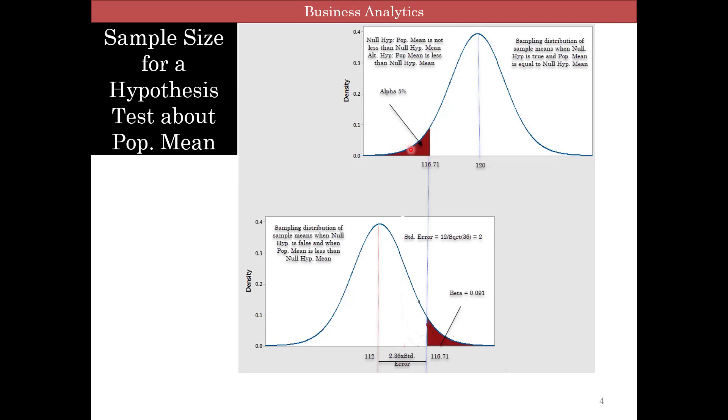If you get a sample mean which is less than 116.71, you reject your null hypothesis and send the batteries back. If it's more, you fail to reject.